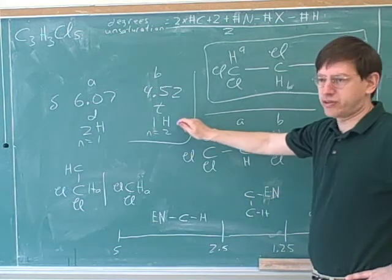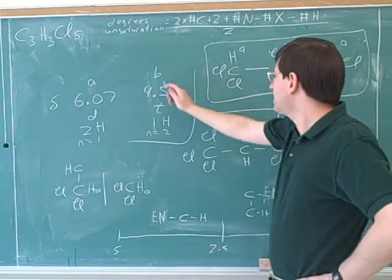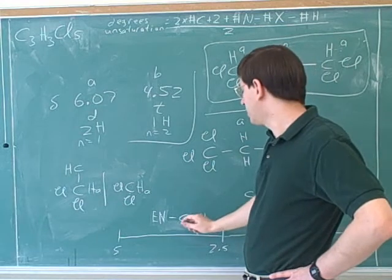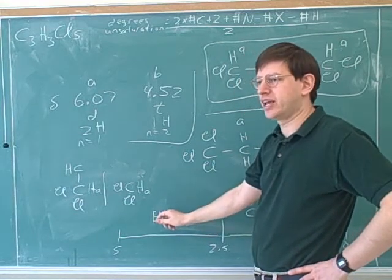There's a single hydrogen in this group. That's right. And now what would we expect here for group B? Well, this 4.52 is in this region, so we would expect that this hydrogen would also be on the carbon that's attached to an electronegative element.